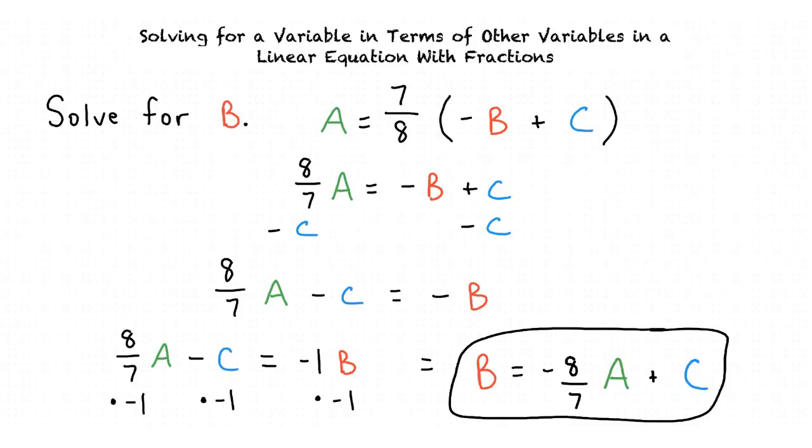Okay that makes sense. In order to solve for the variable b we must get b all by itself. To do this we use mathematical properties to manipulate the variables and constants in our equation. Once we have b all by itself we have our answer. That's exactly right. Great job.